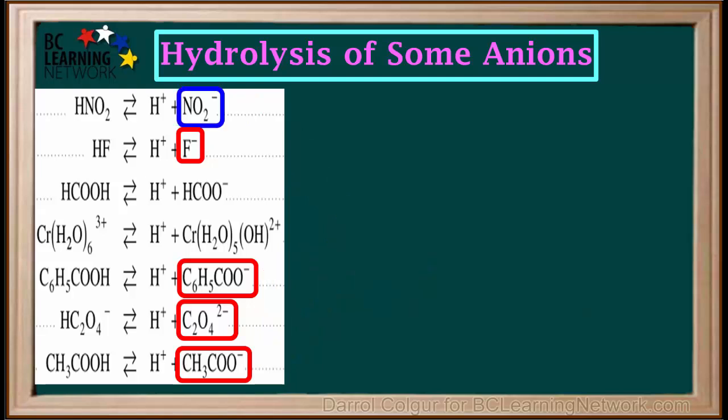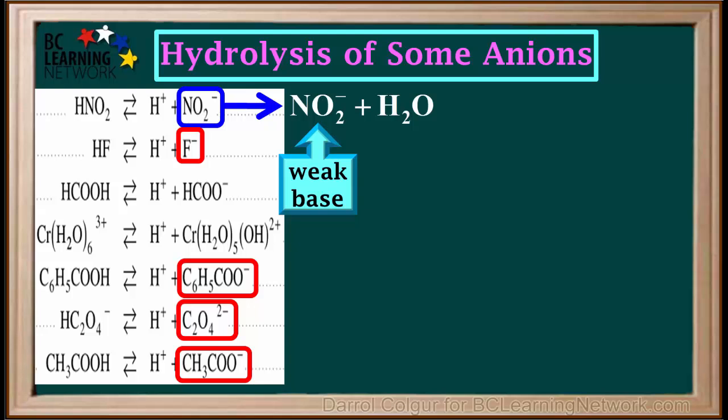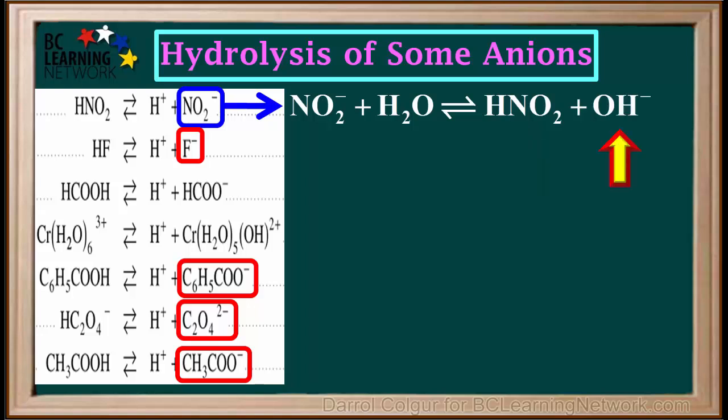We'll now write the hydrolysis equations for these, starting with the nitrite ion, NO2-. We write down NO2-. Because it's hydrolysis, we add water. NO2- is a weak base, so it takes a proton from water, forming its conjugate acid, HNO2, and a hydroxide ion.